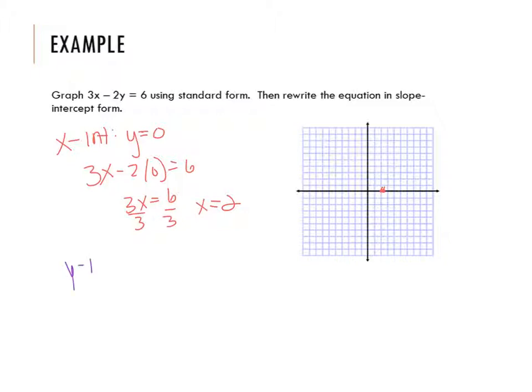Y-intercept. What do I know about the y-intercept? Well, I know x is 0. So I'm going to make x be 0. 3 times 0 is 0. So I get negative 2y equals 6. Divide by negative 2. Y equals negative 3.